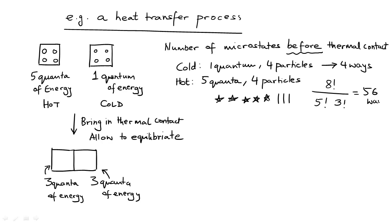So the total microstates before thermal contact is equal to the number of microstates in the hot particle times the number of microstates in the cold particle. The total microstates are 56 times 4, that is 224 microstates before thermal contact.